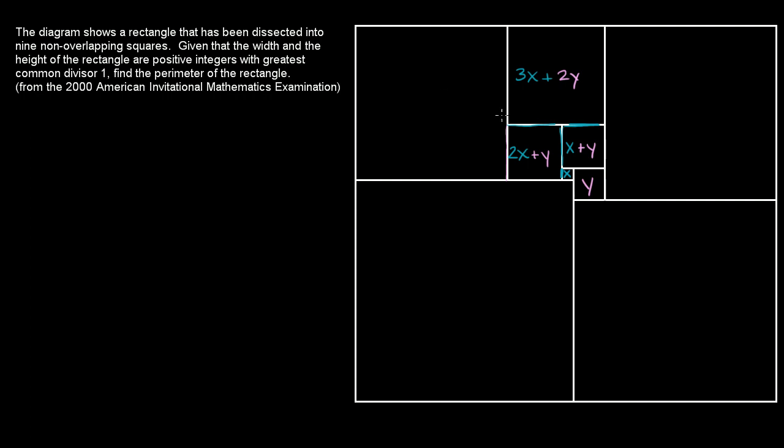Now let's go to this next square. If this length is 3x plus 2y and this length is 2x plus y, then this entire length is going to be 5x plus 3y. And we can also go to this side where we have this length, 3x plus 2y, this is x plus y, and this is y. So if you add them, you get 4x plus 4y.